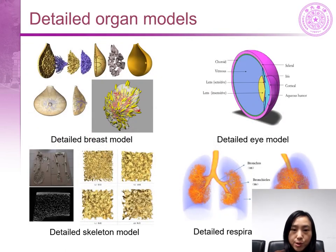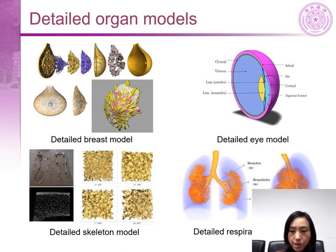For some radio-sensitive organs, they have very complex structures. We have developed the detailed organ models for these organs, including the detailed breast model, detailed eye model, detailed skeleton model, and detailed respiratory tract model.